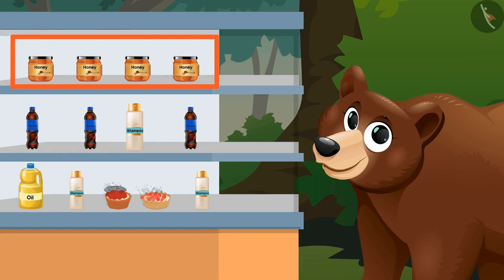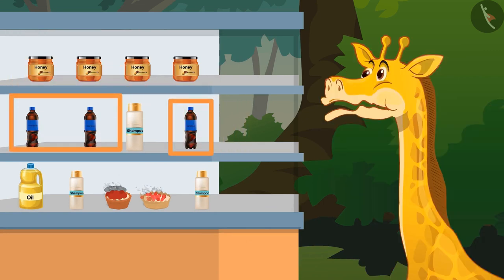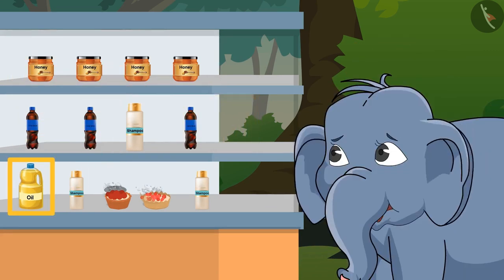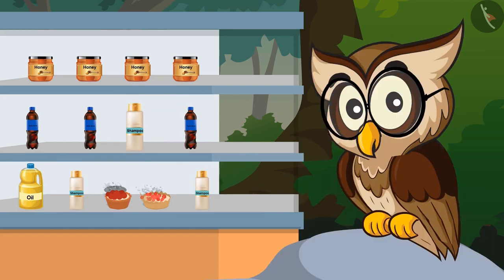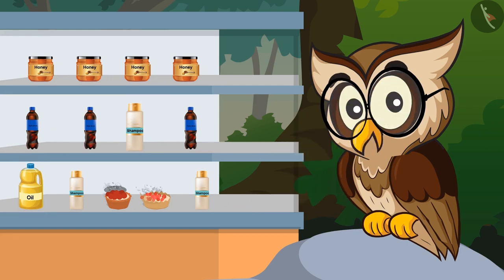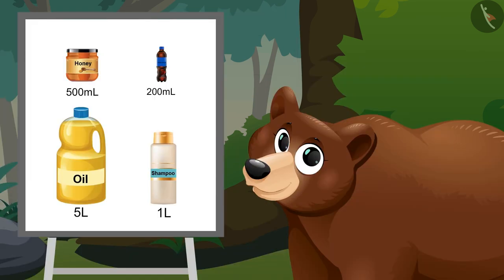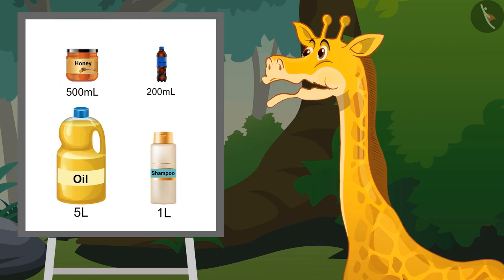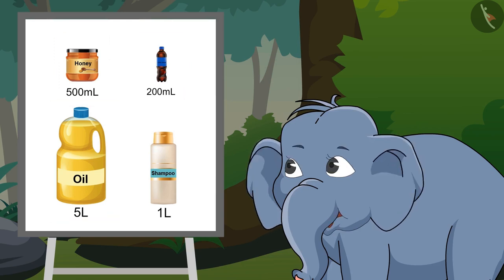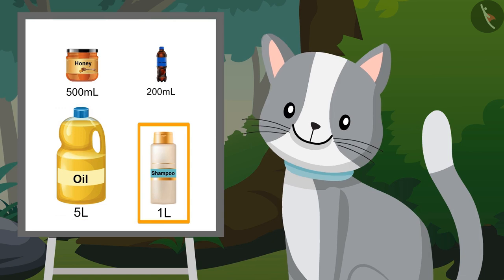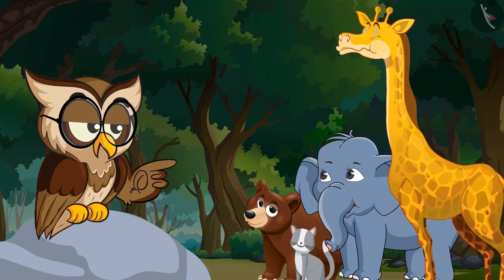Bottle of Honey, Bottle of Cold Drink, Bottle of Oil, Bottle of Shampoo. Well done! Can you match all these liquids with their right amount? Bottle of Honey is 500 ml, Bottle of Cold Drink is 200 ml, Bottle of Oil is 500 ml, Bottle of Shampoo is 500 ml. Exactly.